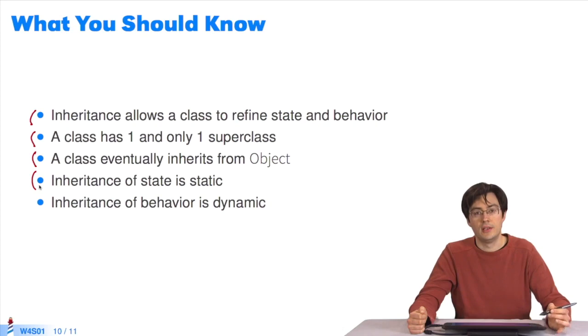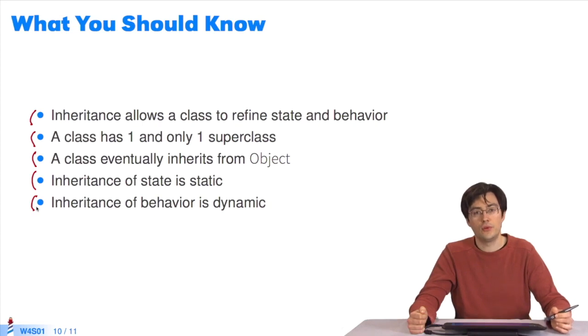Inheritance of state is static. It happens when the subclass is defined. But inheritance of behavior is dynamic, happening at run time, when you send a message to an object.